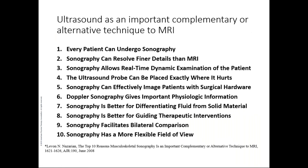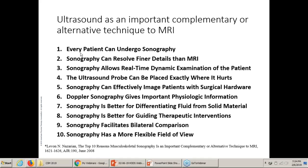A great article by AIUM, authored by musculoskeletal radiologist Levon Nazarian — editor-in-chief of the Journal of Ultrasound Medicine — gives 10 reasons why ultrasound should be used as a complementary or alternate technique to MRI. Every patient can undergo sonography. Ultrasound can resolve finer details than MRI, especially for nerve and tendon imaging. The fibrillar structure of tendons and the fascicular arrangement of nerves visible on ultrasound cannot be seen with the same detail on MRI.